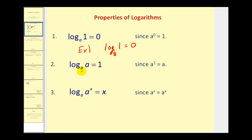Property two says log base A of A is equal to one, since A to the power of one will equal A. So if the base and the number are the same, it will always equal one. An example of that would be log base five of five equals one.